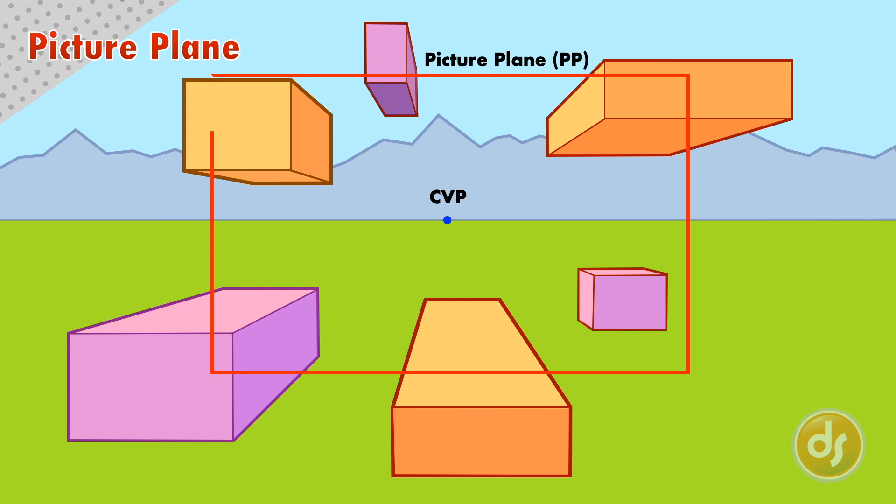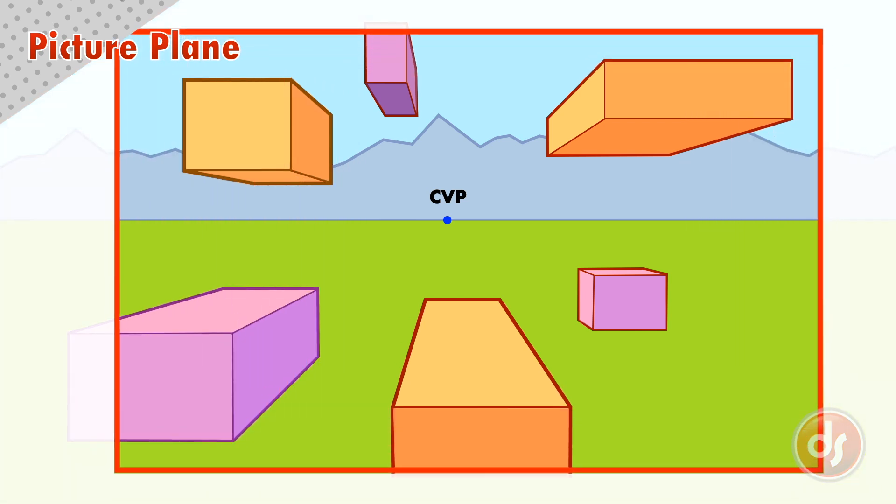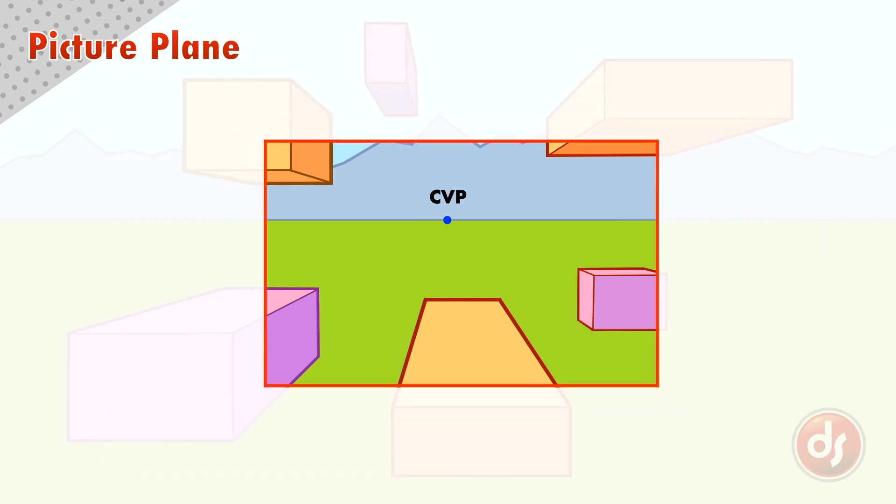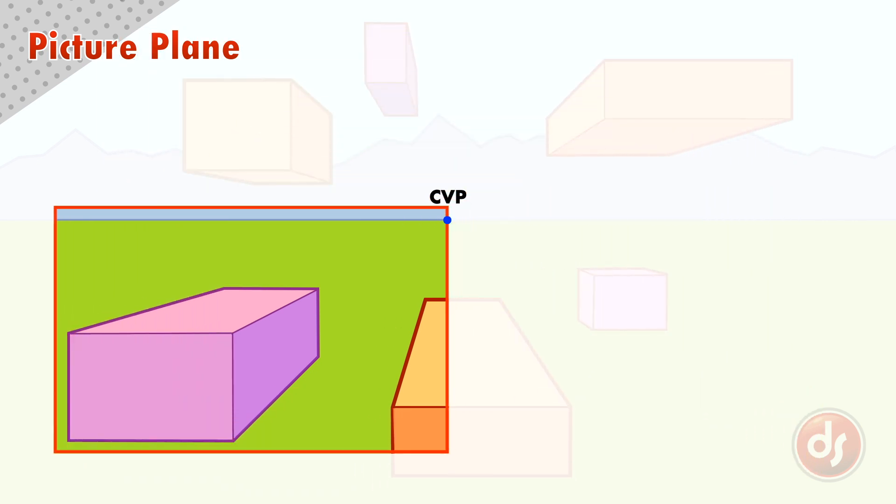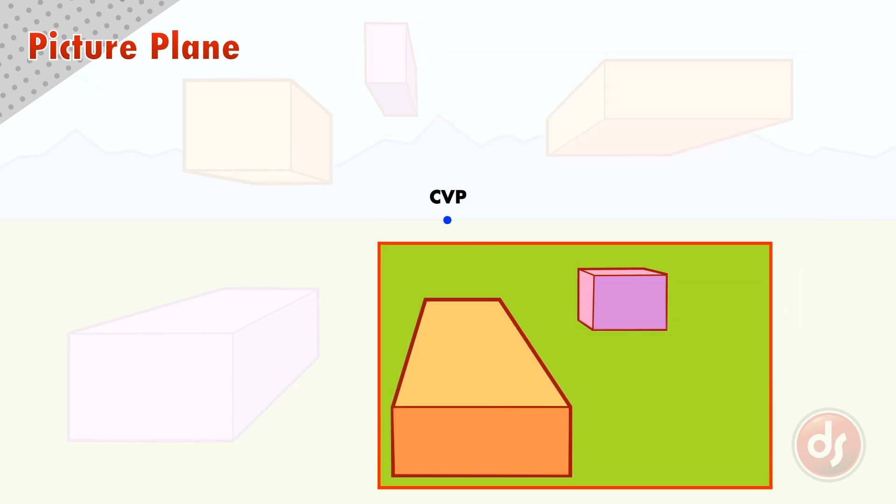The picture plane can be centered on the center of vision point, or offset. It can be big or small. The horizon line can be high in the picture plane, or it can be low in the picture plane, or even outside of the picture plane. Even if it's outside of the picture plane, we still need to know where it is to draw a correct linear perspective.